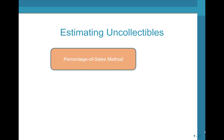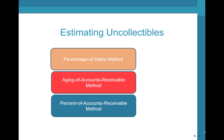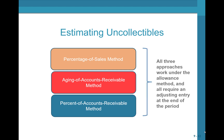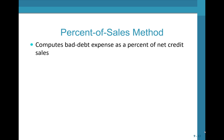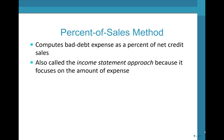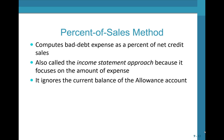How do you estimate uncollectibles? First, you could use the percentage of sales method, which is an income statement approach. Then there are two balance sheet approaches: the aging of AR method and the percentage of AR method. All three work under the allowance method, and all three require an adjusting entry at the end of the period. Let's start with the easiest: the percentage of sales method.